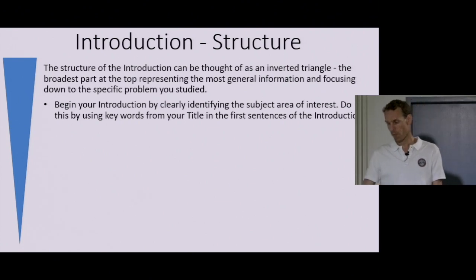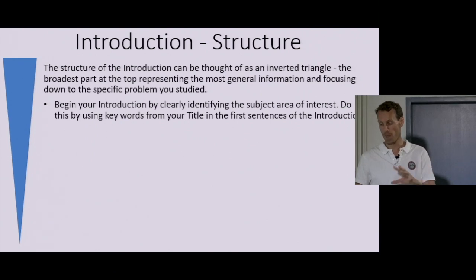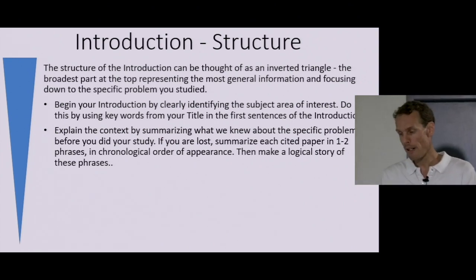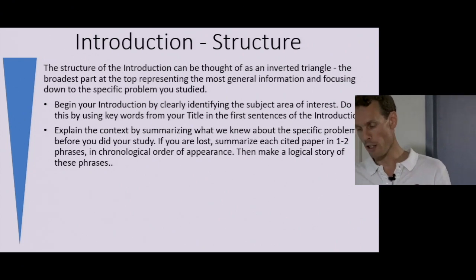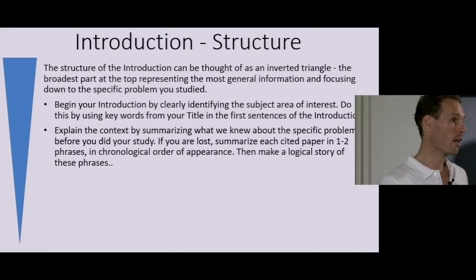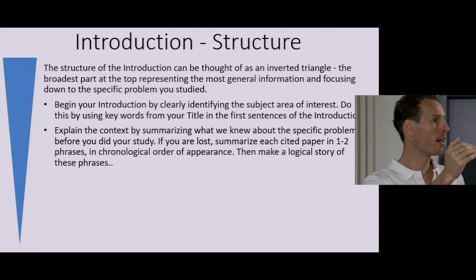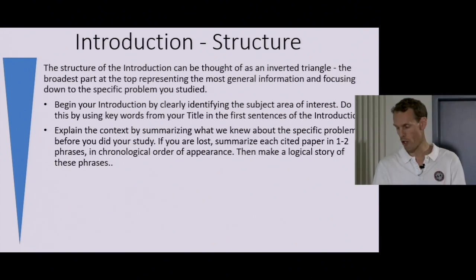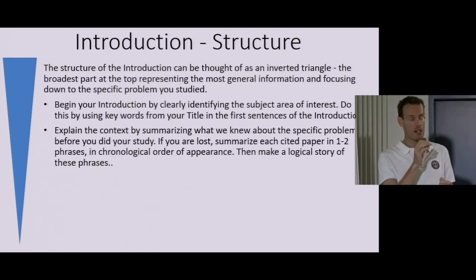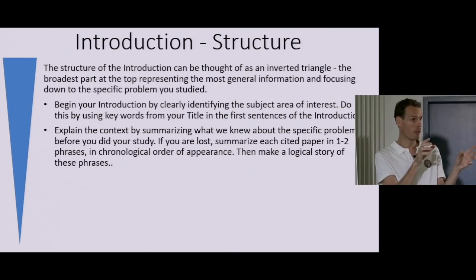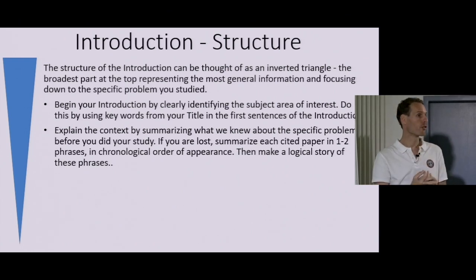At the start of the introduction, clearly identify the broad subject of interest by repeating keywords from your title in the first sentences. You explain the context by summarizing what we already knew about a specific problem before you did your study — basically what's been done before. Cite the literature. If you find it difficult to line that up as a story, just start by citing each important paper, summarize it in one or two lines in chronological order of appearance, and then try to make a logical story out of that.